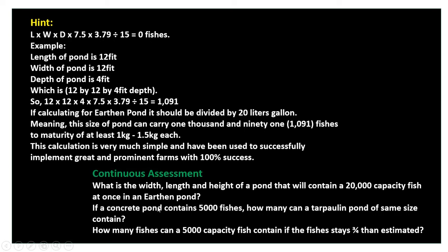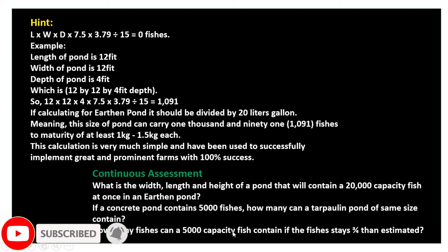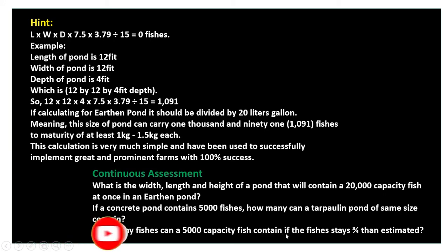Second question: if a concrete pond contains 5,000 fishes, how many can a tarpaulin pond of the same size contain? And third: how many fishes can a 5,000 capacity pond contain if the fish stays to a quarter of the estimated size? Post your answers in the comment box and let's see who gets them right.